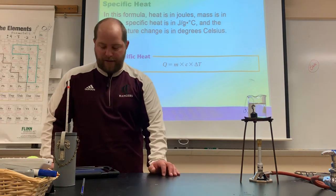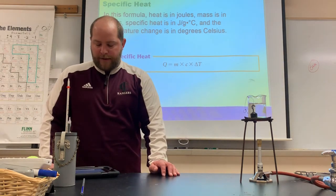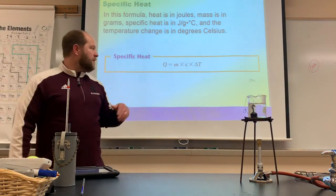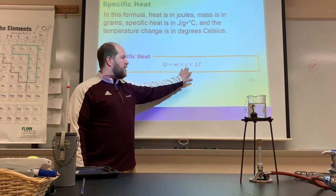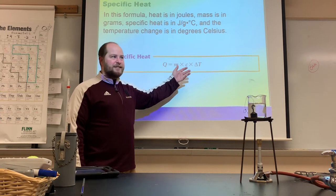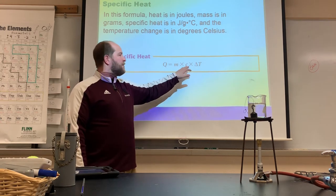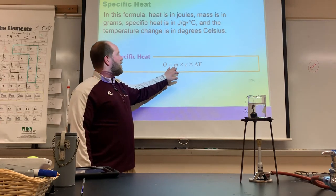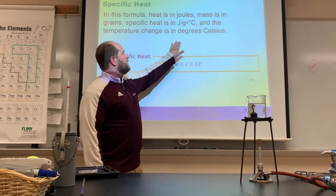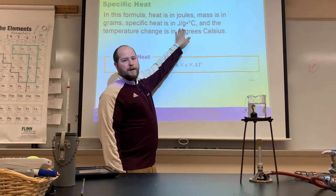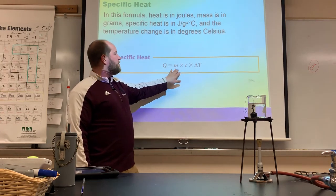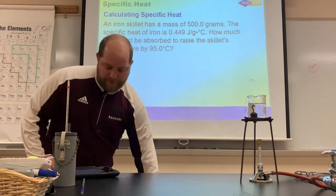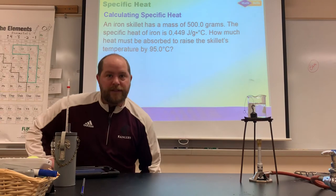Here is the formula: Q equals mcΔT — this is how we calculate the thermal energy of an object. Q is heat, m is mass in grams, c is specific heat (we use C even though specific heat starts with S), and ΔT is the change in temperature in degrees Celsius.